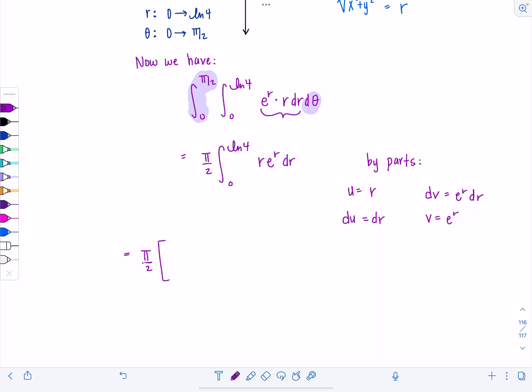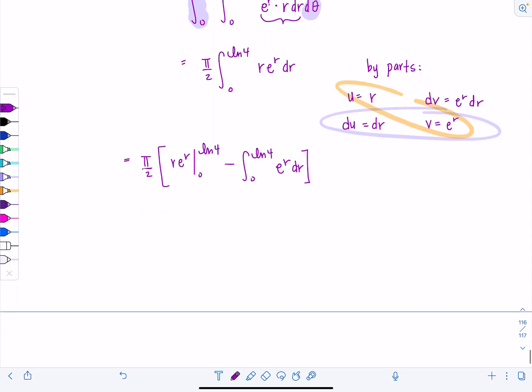Keep that pi over 2 outside. And then we're going to have r e to the r evaluated from 0 to ln of 4 minus integral 0 to ln of 4, v du, which would be e to the r dr. No big deal. Anti-derivative of e to the r is e to the r, so we've got pi over 2, r e to the r minus e to the r evaluated from 0 to ln of 4.